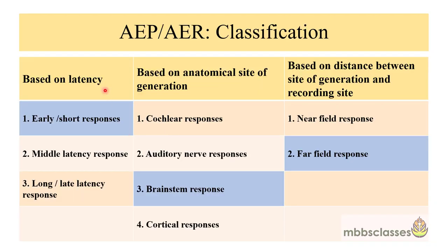ABR is one of the auditory evoked potentials. These auditory evoked potentials refer to all the auditory evoked responses from the brain and they may be classified on the basis of latency. They may be early or short responses when the responses occur within 10 to 15 milliseconds after stimulus presentation. The example of this early response is electrocochleography and ABR. Then it may be a middle latency response when we get the response after a duration of 10 to 50 milliseconds.